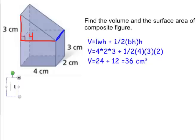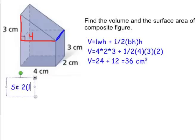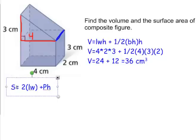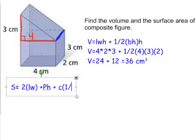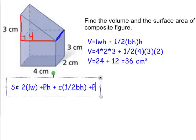Now let's talk about surface area. For the rectangular prism, the formula is 2 times the area of the base (length times width) plus the perimeter of the base times the height. To that we add the surface area formula for the triangular prism: 2 times one-half times base times height, plus the perimeter times the height of the prism.